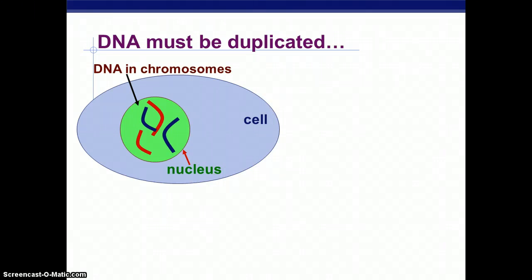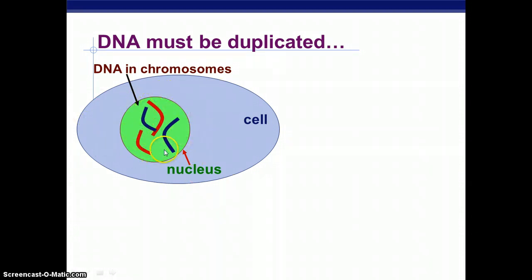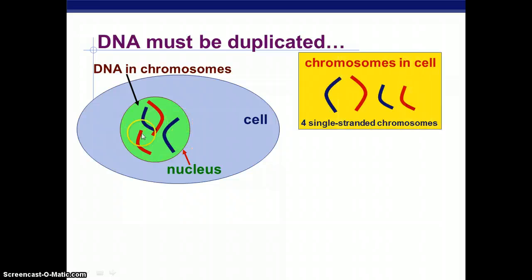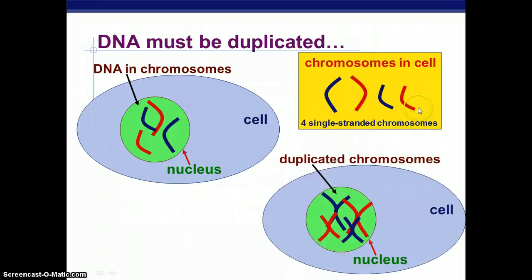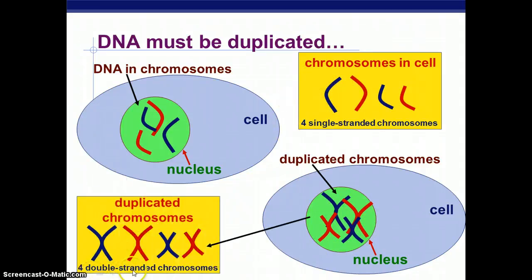In order to duplicate DNA, you have the cell, the nucleus, and then the DNA. Normally, DNA is a squiggly mass, but once it condenses, it forms chromosomes. If you were to spread these out, you end up with four single-stranded chromosomes. Once you duplicate the chromosomes, that is where you start to see that X pattern most of us are used to seeing, and you end up with four double-stranded chromosomes. So you go from a single strand, duplicate it, and end up with a double strand.